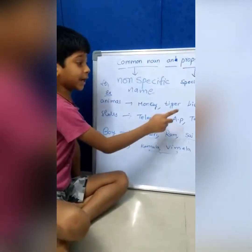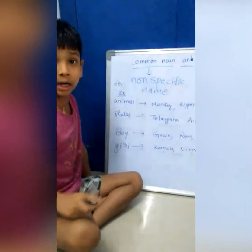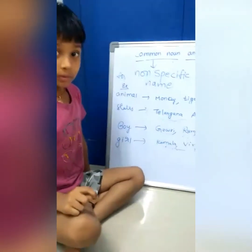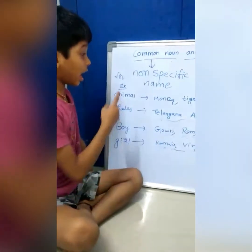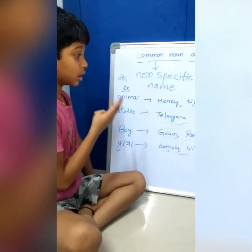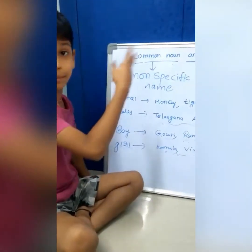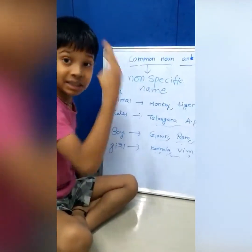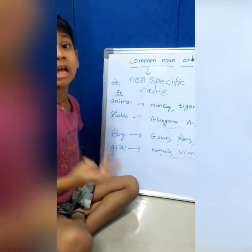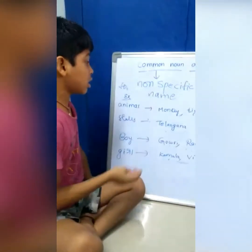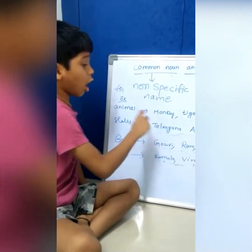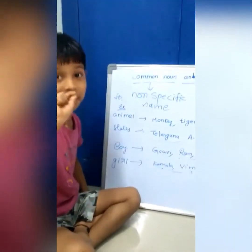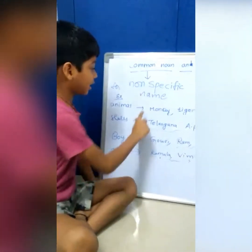Monkey, tiger, lion — they are animals. Animals is a common noun. They have particular names.